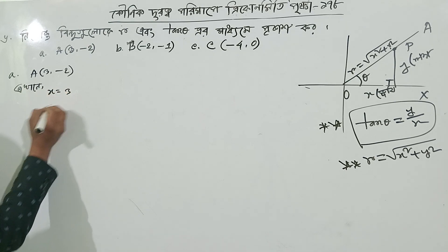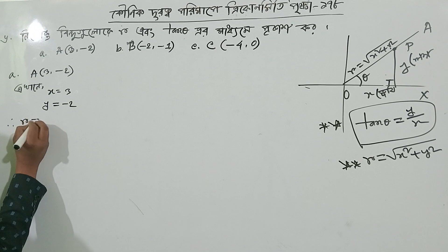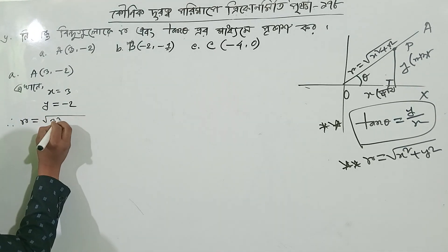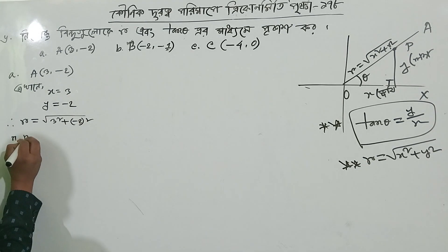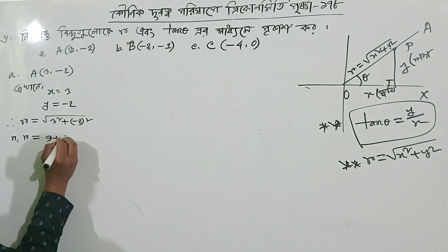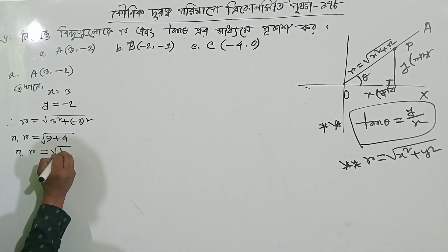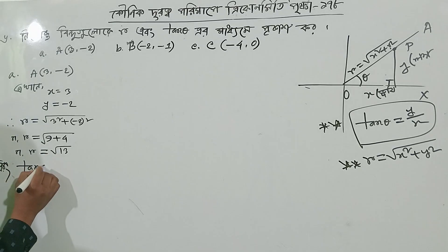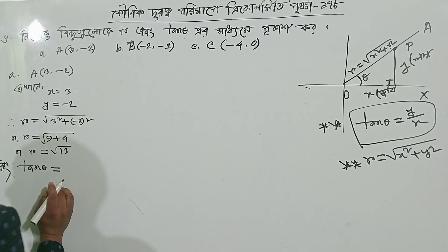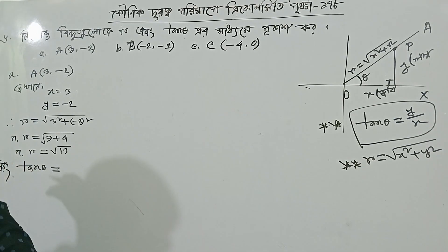x equal 3, y equal minus 2. So r equal to root of 3 squared plus minus 2 squared. r equal to 9 plus 4, equal to root 13. So r equal to root 13.